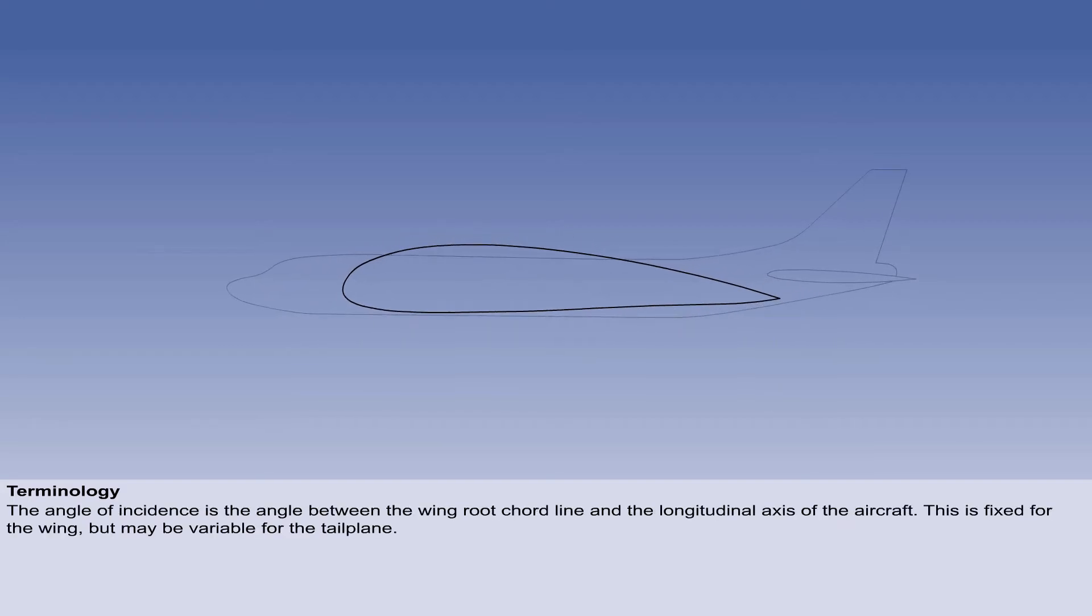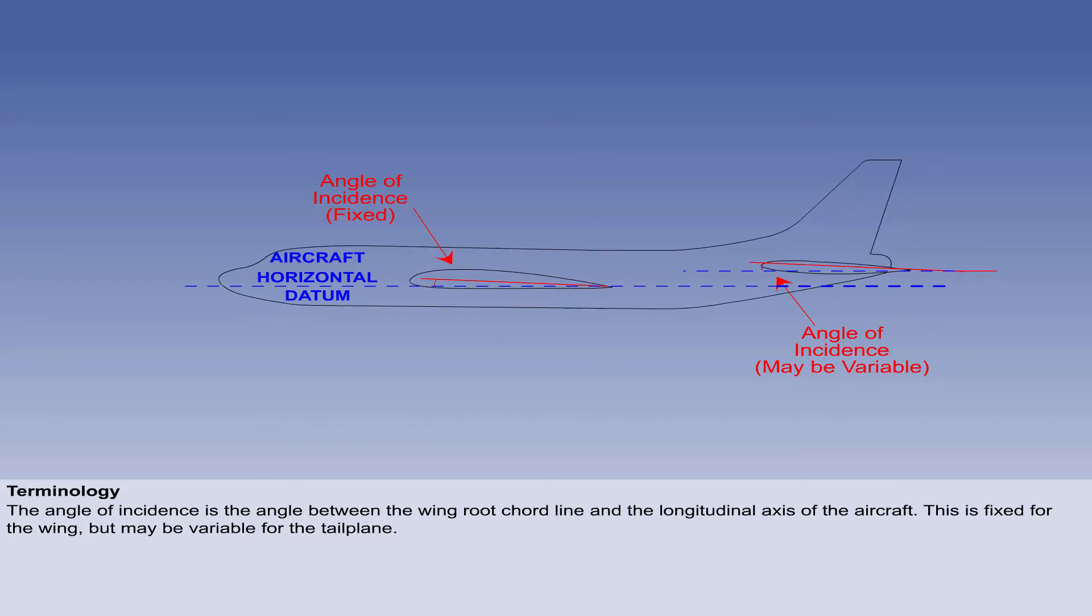The angle of incidence is the angle between the wing root cord line and the longitudinal axis of the aircraft. This is fixed for the wing, but may be variable for the tail plane.